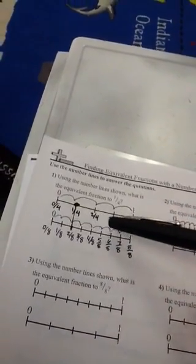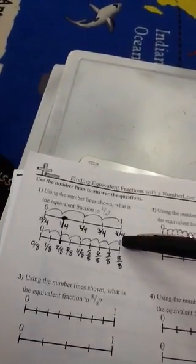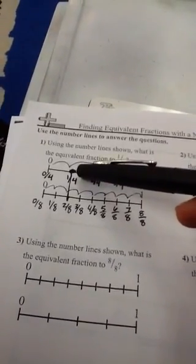So 0 fourths, 1 fourth, 2 fourths, 3 fourths, 4 fourths. Since we are working to find what fraction is equivalent to 1 fourth, I had the children put a dot where 1 fourth is on the line.